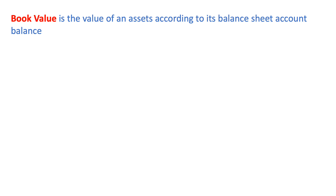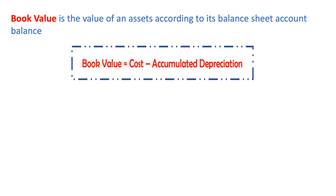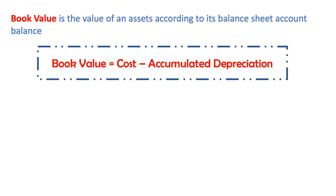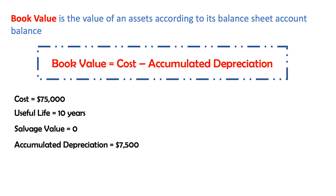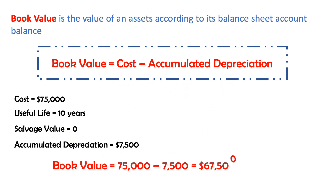What is book value? Book value is the value of an asset according to its balance sheet account balance. Book Value equals Cost minus Accumulated Depreciation. In the previous example, the book value is $75,000 minus $7,500, which equals $67,500.